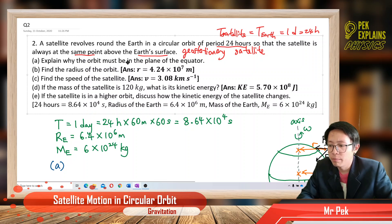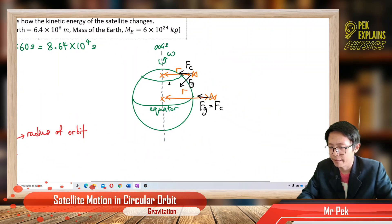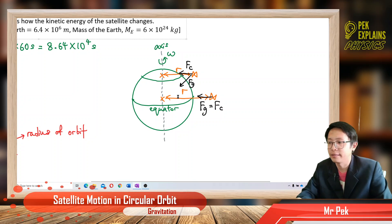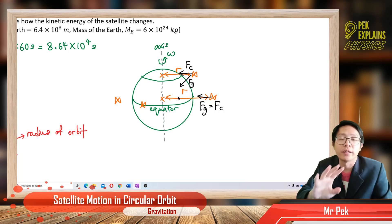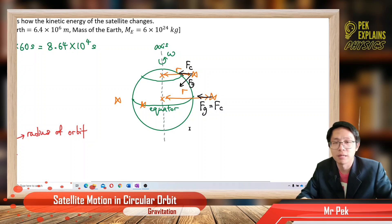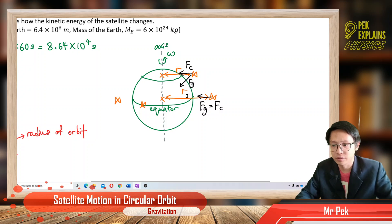Now, explain why the orbit must be in the plane of the equator. The satellite orbit is always on the equator — all satellites are above the equator. You cannot find any satellite at the northern hemisphere or southern hemisphere; all satellites concentrate above the equator.